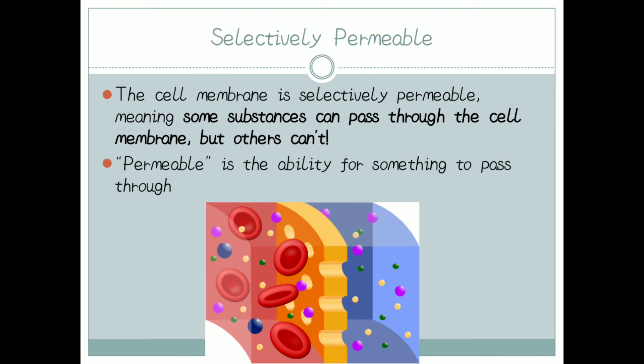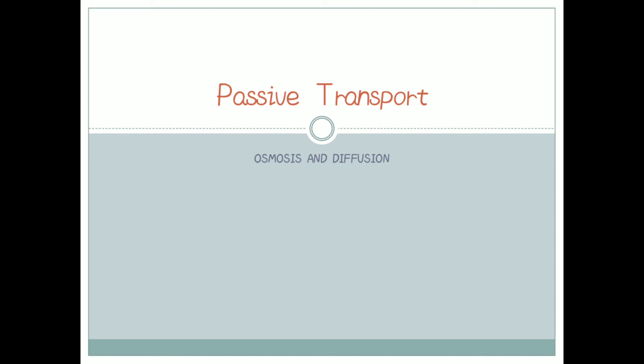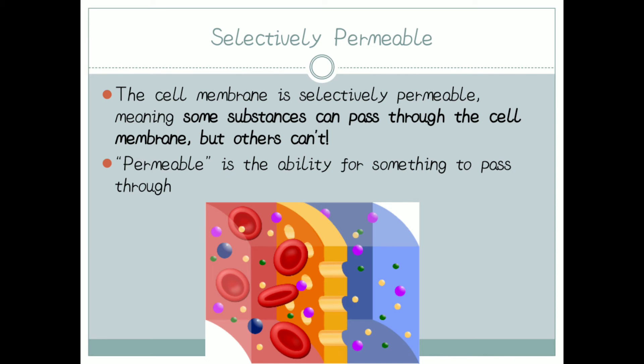Just as we as humans are also selective — for example, if you don't want eggplant, you choose another vegetable like fenugreek — similarly, this cell membrane has a choice of substances. The substances it requires are taken inside, and the substances not required are banned from entering inside this cell membrane. So you understand what is meant by selectively permeable.